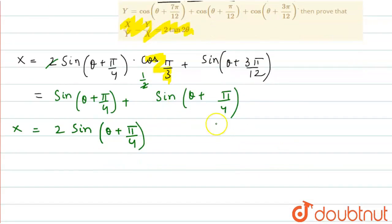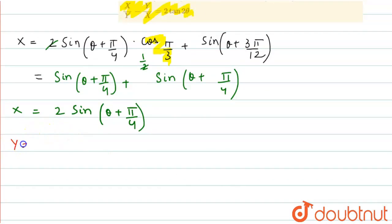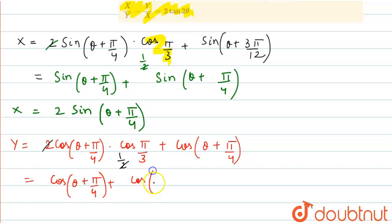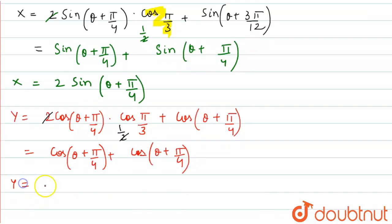Now taking the value for y, again applying the cos C plus D formula in y. Y is equal to 2cos(θ + 5π/4) into cos(π/3) plus cos(θ + 5π/4). Again, cos(π/3) is half, and 2 will be cancelled. So we get cos(θ + 5π/4) plus cos(θ + 5π/4), and the value for y becomes y is equal to 2cos(θ + 5π/4).